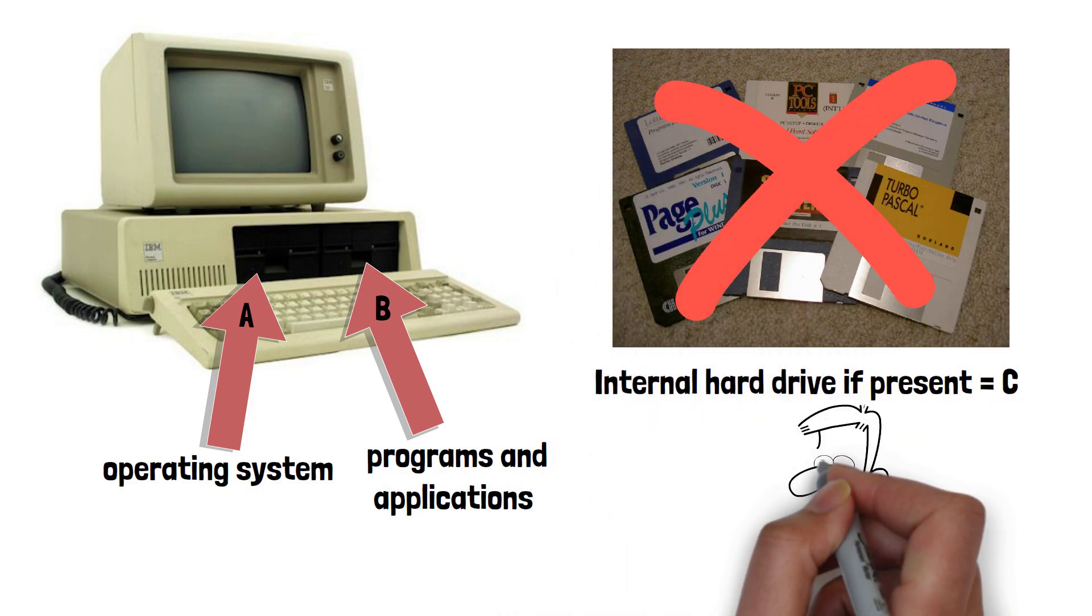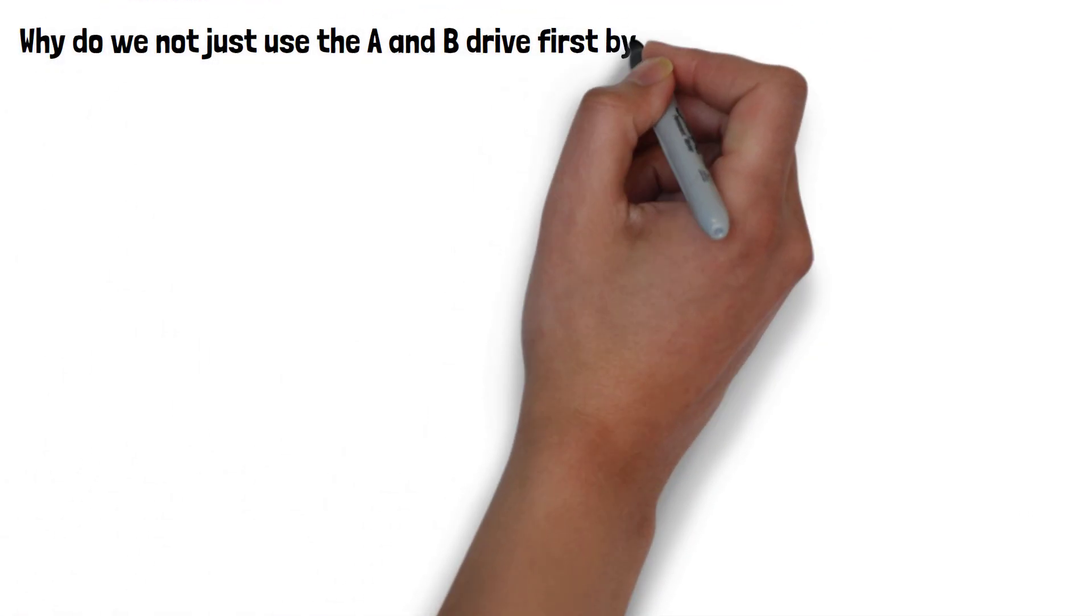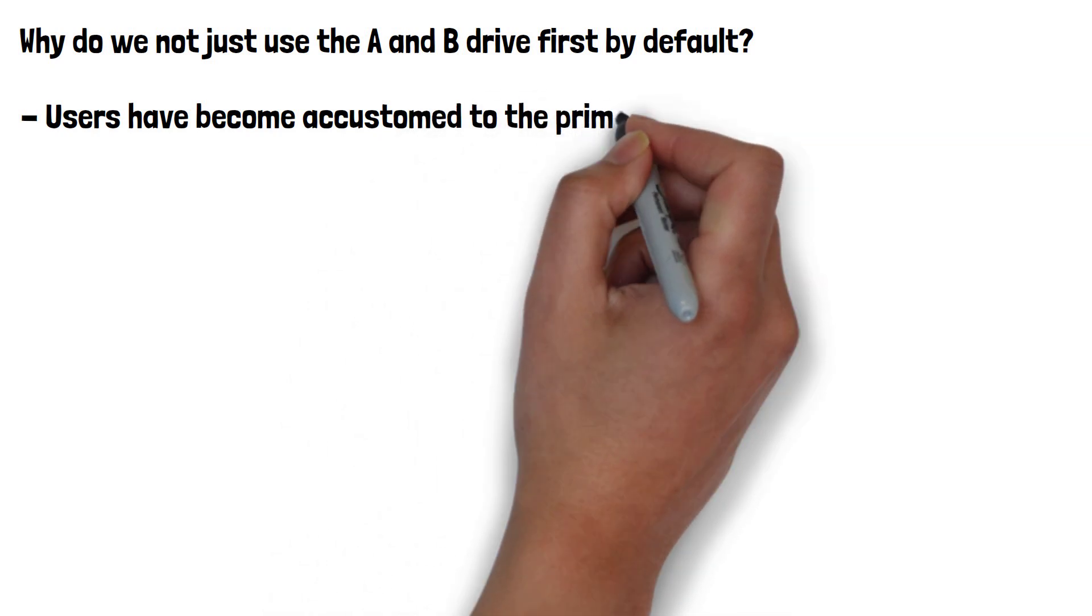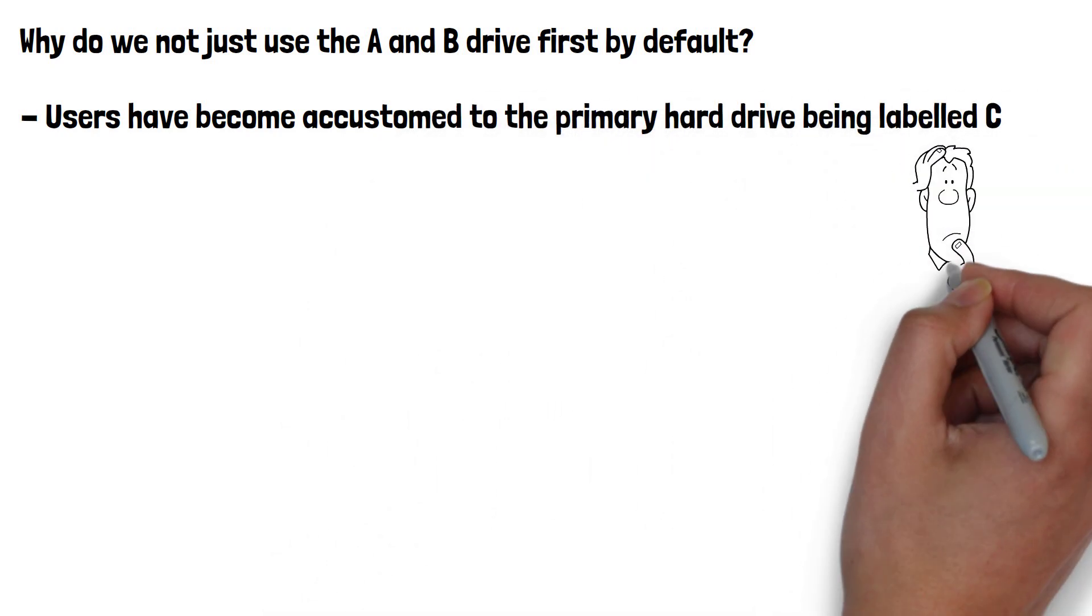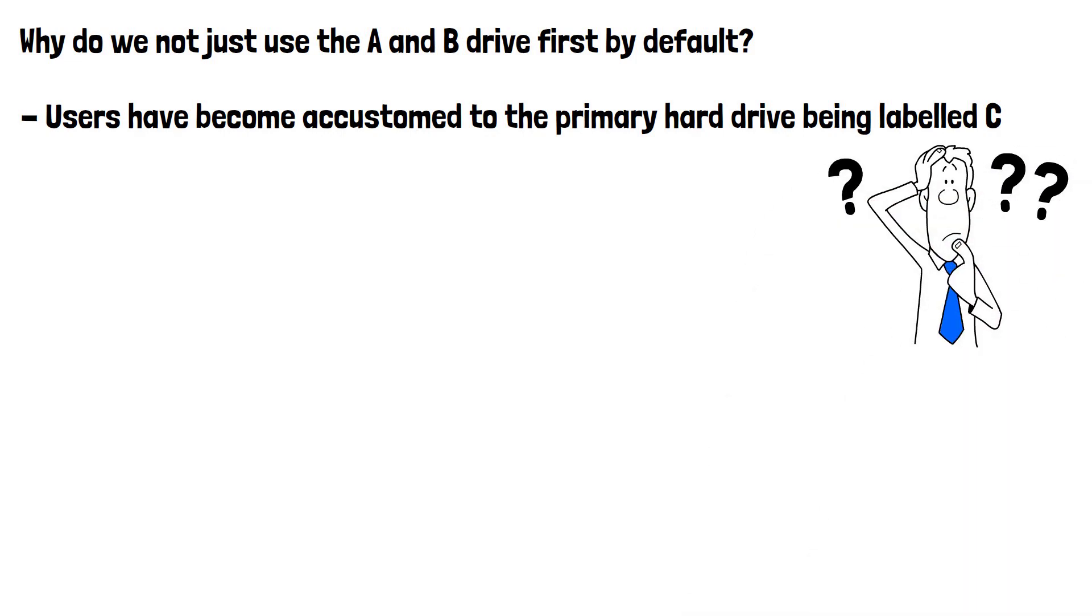so why do we not just use the A and B drive first, by default? The first reason is that over decades users have become accustomed to the primary hard drive being labeled C. Changing this convention would create confusion and unnecessary headaches. If it's not broken, don't fix it is the thinking here.